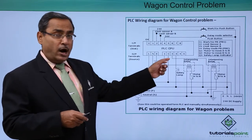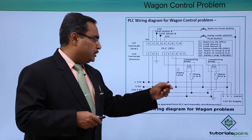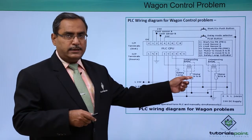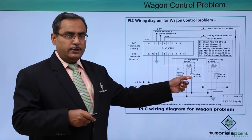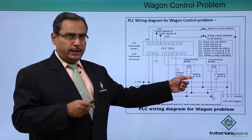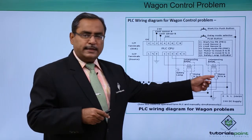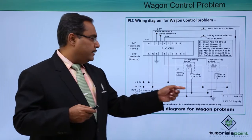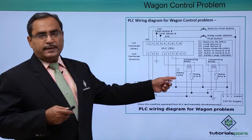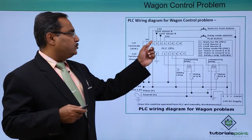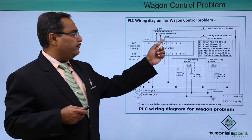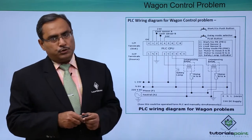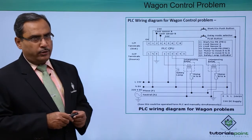This is the output section. In this output section we have a motor connected through an interposing relay which will move the wagon from limit A to limit B. There is another motor which will bring it back, and that is the safety lamp. So we have four inputs and two or three outputs accordingly.